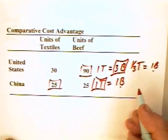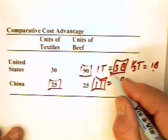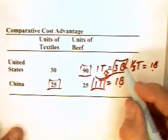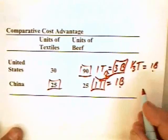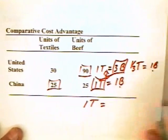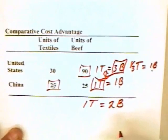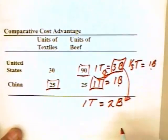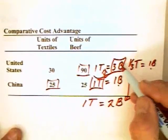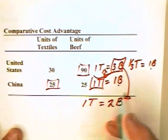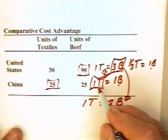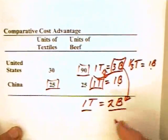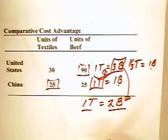China has a comparative advantage in textiles, mainly because every time the United States produces a textile it gives up three beef, whereas in China producing a textile only costs one beef. If there is an exchange ratio between these two products somewhere between one textile for three beef and one textile for one beef, then trade is mutually beneficial. For example, suppose trade is set at one textile equals two beef. The United States can produce three beef and trade two of them for one textile — or trade all three for one and a half textiles — and be better off. China can produce one textile and trade it for two beef. Both countries can have more of both products.